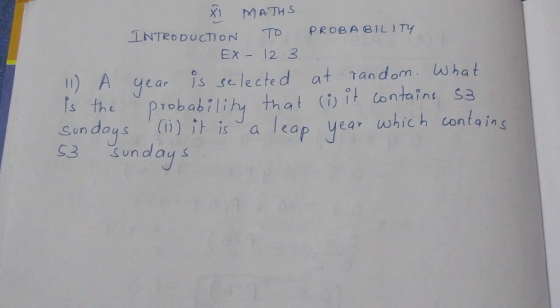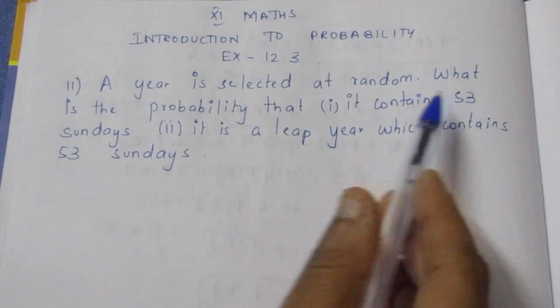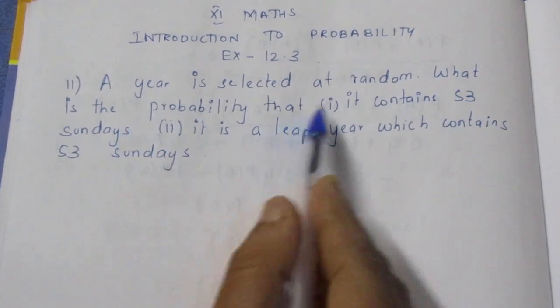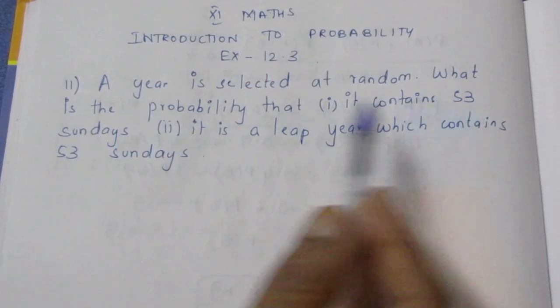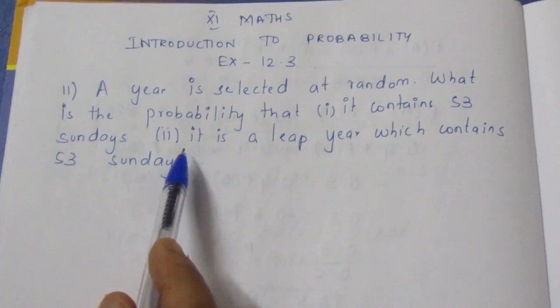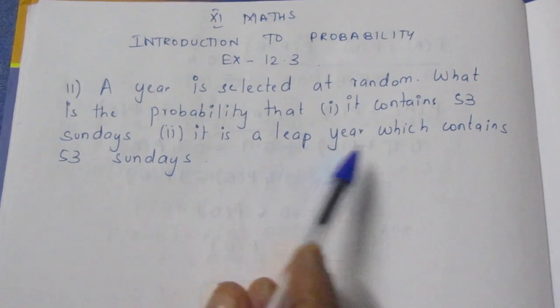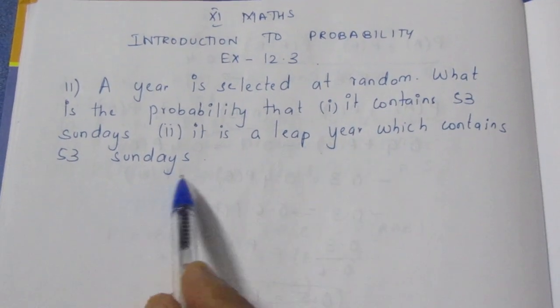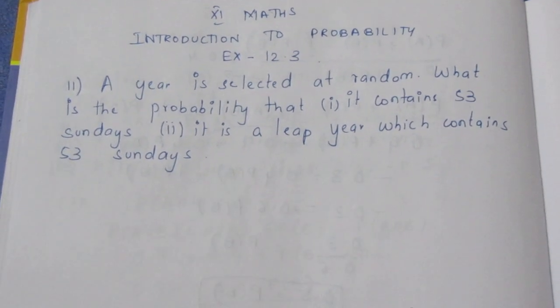A year is selected at random. What is the probability that it contains 53 Sundays? Second one: it is a leap year which contains 53 Sundays.